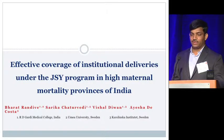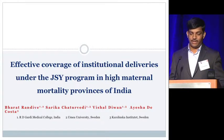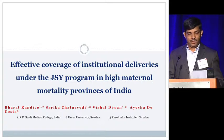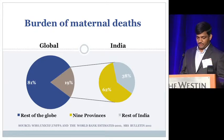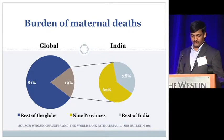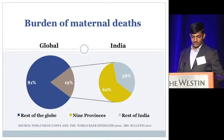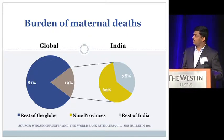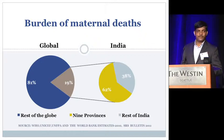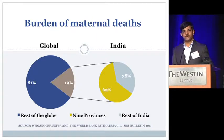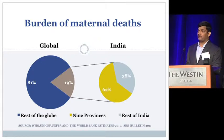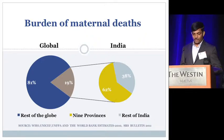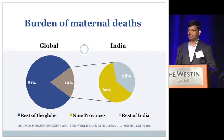I'm presenting on effective coverage of institutional deliveries under the JSY program in high maternal mortality provinces of India. This slide shows the distribution of burden of maternal deaths. India accounted for 19% of global maternal deaths in 2010, and within India, nine provinces with poor health indicators contribute 62% of maternal deaths in the country.